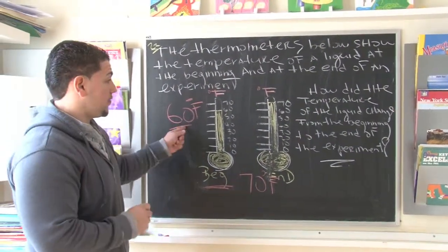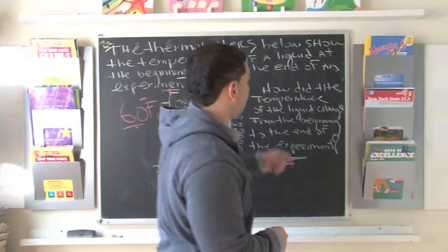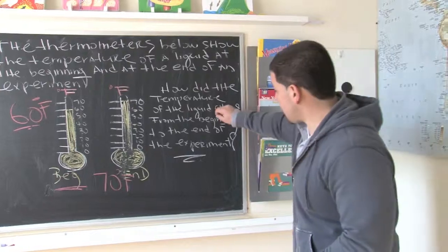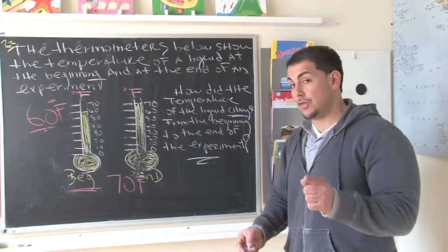We know at the beginning it was 60 degrees. We know at the end it was 70 degrees. So let's look at the question. The question says, how did the temperature of the liquid change from the beginning of the experiment to the end?